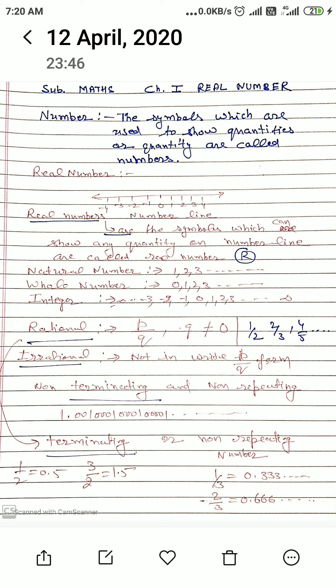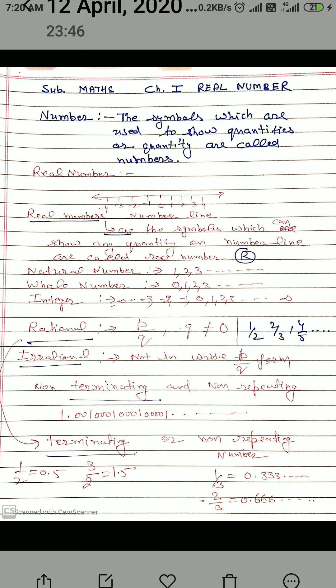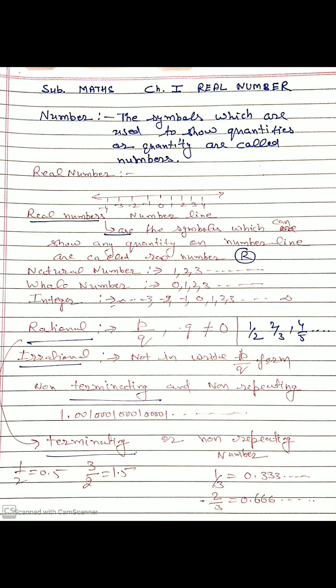When these numbers are represented on the number line, then it is called real number. We can represent all numbers on the line. These numbers are called real numbers. It has so many types.